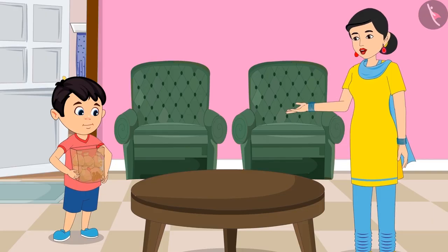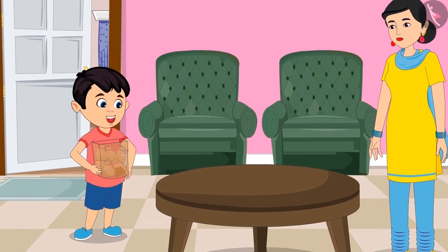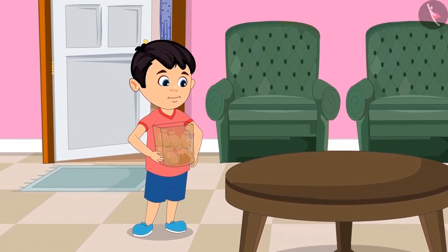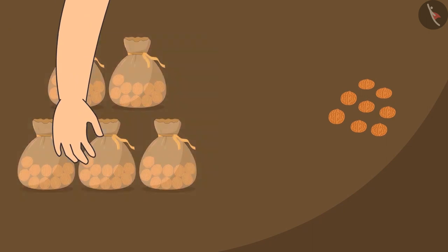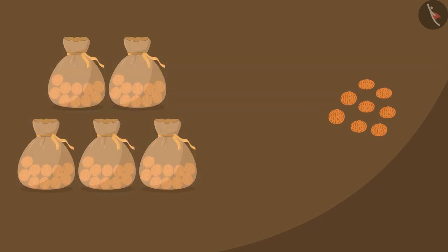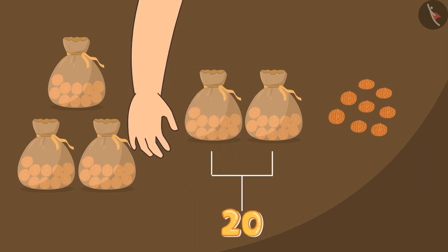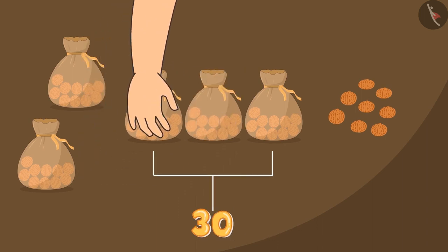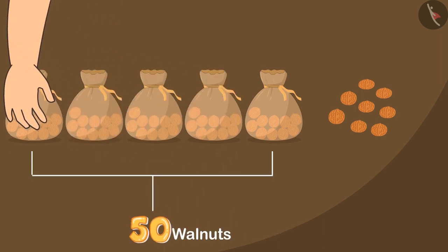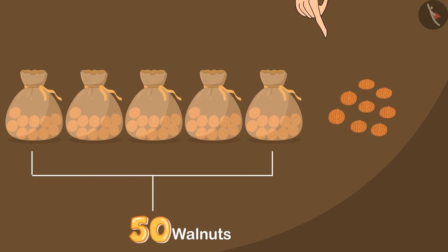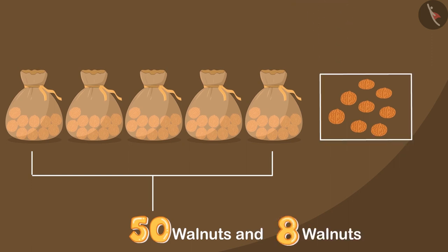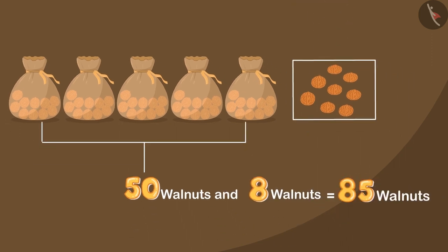Chotu, they seem lesser than 85. Can you count and tell me how many these are? Sure mother, I will just count these. So first of all, here are 5 pouches of 10 walnuts each. Which means 10, 20, 30, 40 and 50. With 8 more, it becomes 85... or so Chotu thinks.